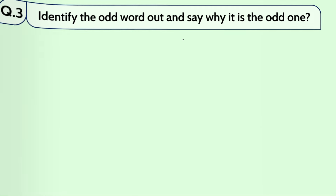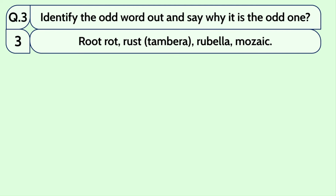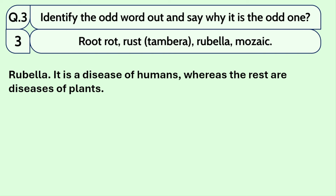Question number 3: root rot, rust, rubella, mosaic — the answer is rubella, because this disease affects humans. Rubella is predominantly a human disease. But the rest — root rot, rust, and mosaic — are plant diseases. These are plant diseases, but rubella is predominantly a disease of humans.